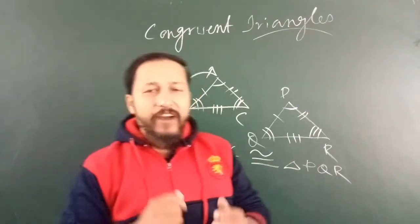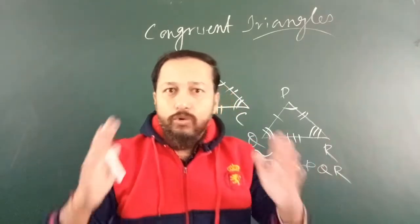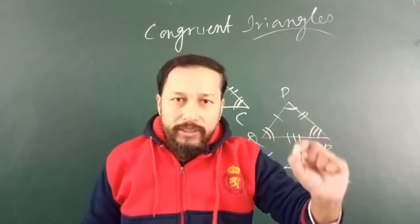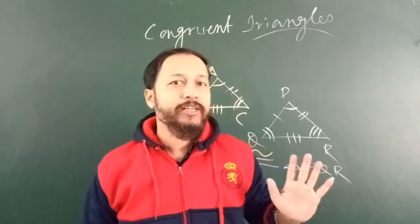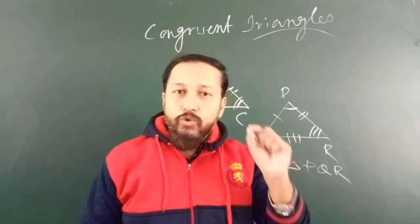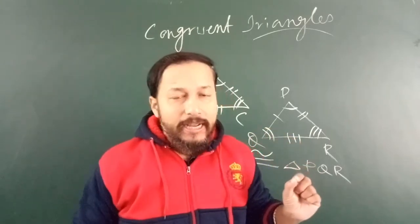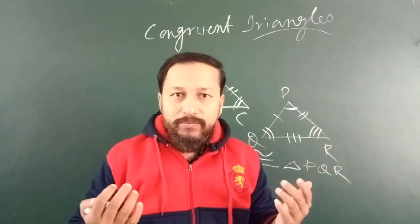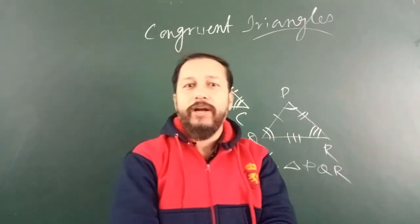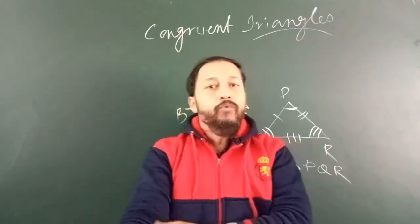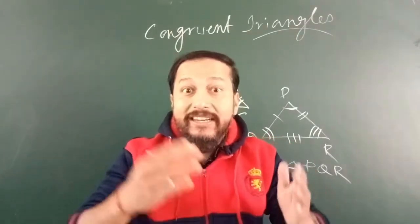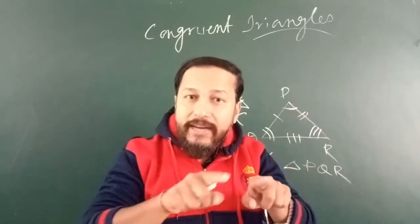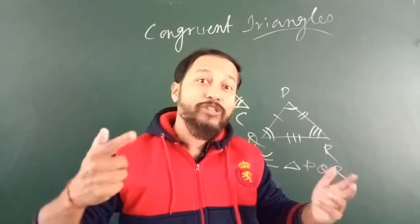Now the question is: if I give you two triangles and ask you to show that they are congruent or not, what are the criteria? What are the conditions you have to show to prove that two given triangles are congruent? Let us discuss those conditions.